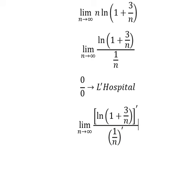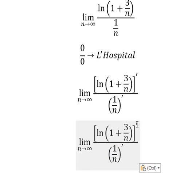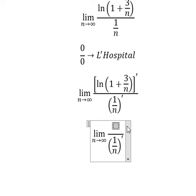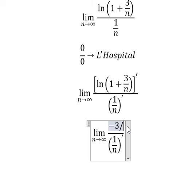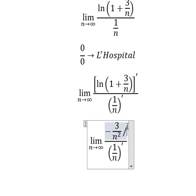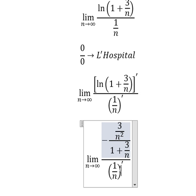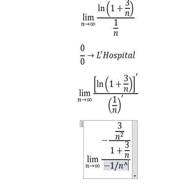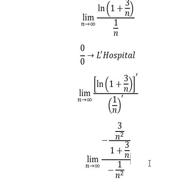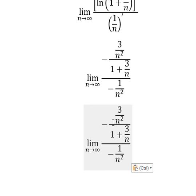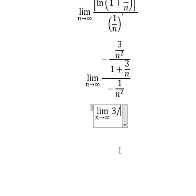That means we need to take the derivative of the numerator and the denominator. In this one we have the formula, and that is negative three over n squared, over one plus three over n. This one gives negative one over n squared.